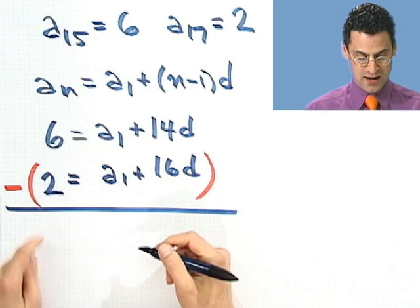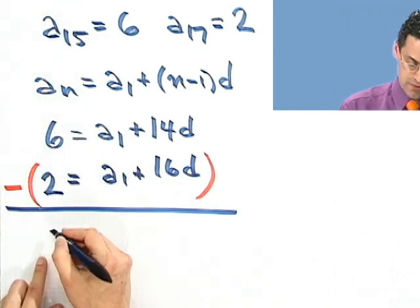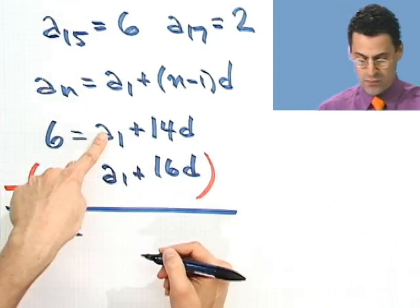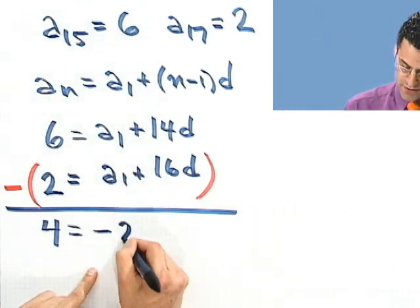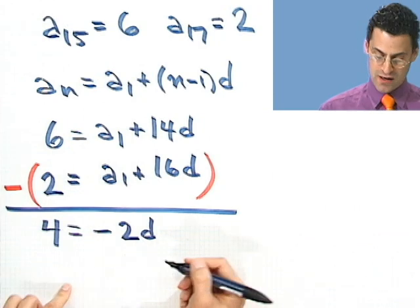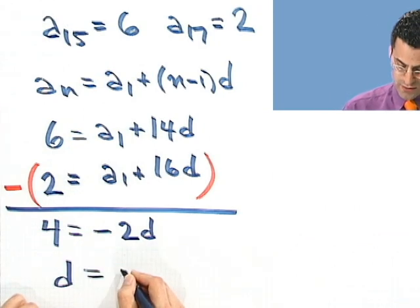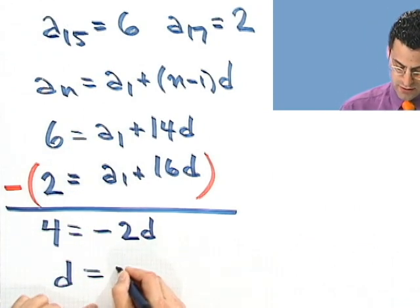If I subtract these equations, I see 6 minus 2 would be 4. a1 minus a1 is 0. 14 minus 16 is negative 2d. So if I solve for d, I see that d must equal, if I divide through by 2, negative 2.